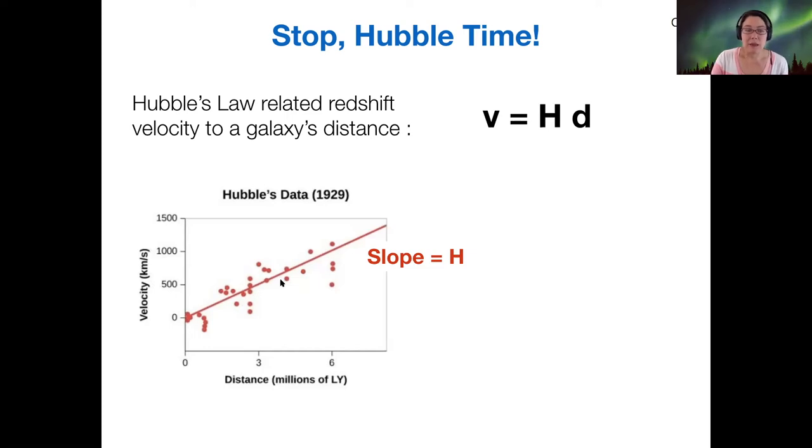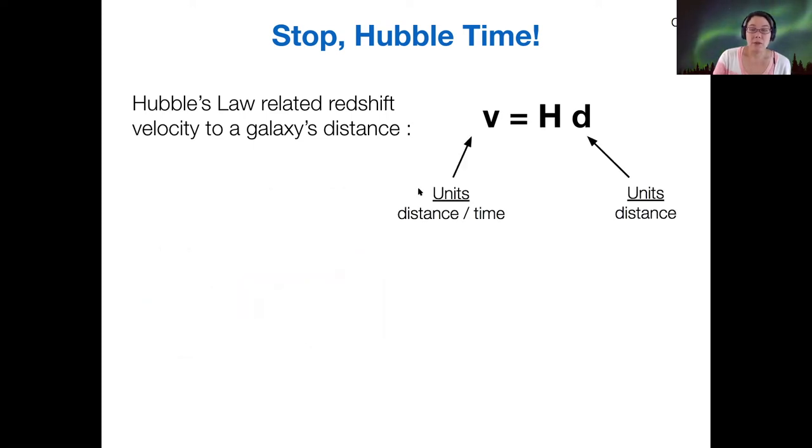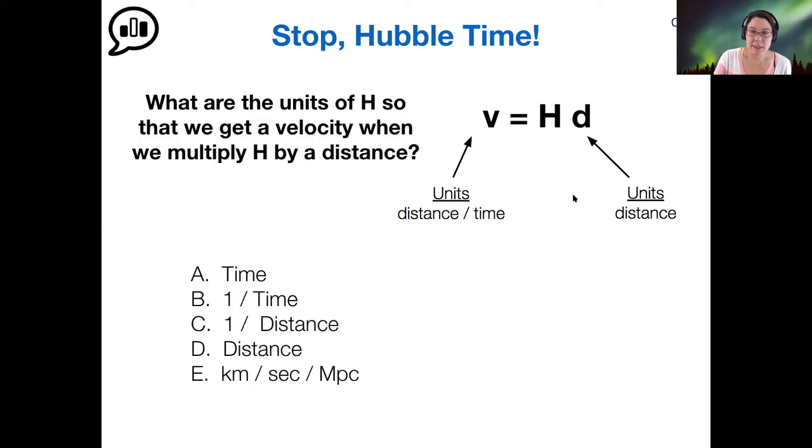So you did this in the Hubble's law lab. But it's better to describe the velocities as redshift because that's what we actually measure. And also, if we think about the units of the Hubble law, where this v unit has the units of distance per time, this d is obviously a unit of distance. Then what does the unit of H have to be so that we get the right results for the units?